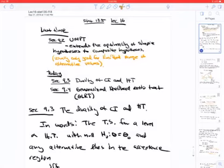Hello, it's Stat 135, lecture 16. Last time we were talking about the Uniformly Most Powerful Test, section 9.2, which extends the optimality of simple hypotheses to composite hypotheses. The problem with uniformly most powerful tests is that they're only good for a limited range of the alternative theta values, and that's not always the range that you need.